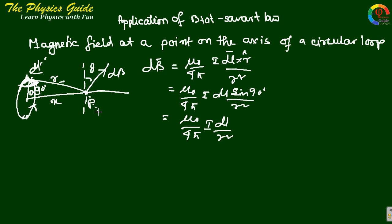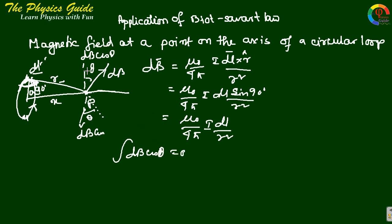For a similar dL on the opposite side of the loop, there will be another dB also at angle theta. If we take the contribution over all the loop, the component dB cos theta for opposite elements will cancel, giving zero net contribution from the cos theta components.